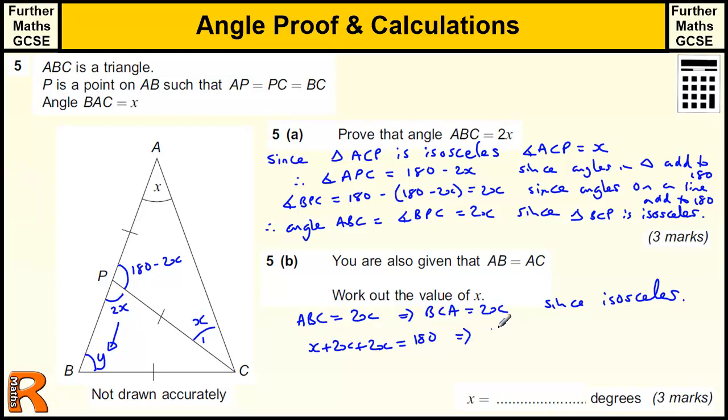So that tells us that 5X equals 180. So x equals 180 divided by 5. The quick way to divide by 5 is divide by 10 and double, which is 36. So x is 36 degrees.